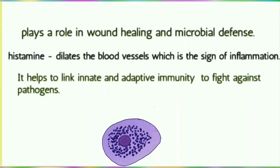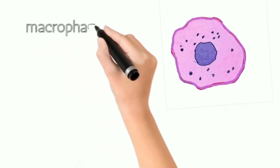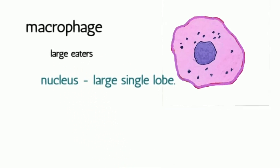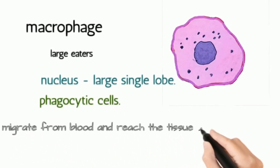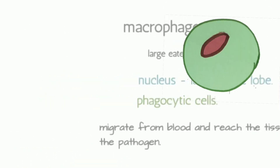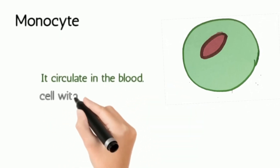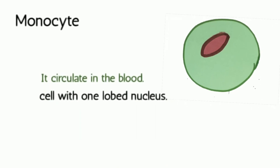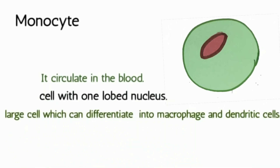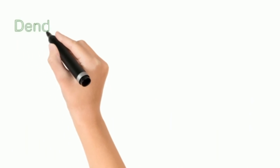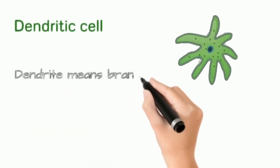Mast cells also serve as a link between innate and adaptive immunity. Macrophages — meaning 'large eaters' — are available in tissues throughout the body and in blood vessels. They destroy pathogens through phagocytosis. Monocytes circulate in the blood and have a single-lobed nucleus. Monocytes differentiate into macrophages. Macrophages perform phagocytosis and also secrete chemokines, which attract other leukocytes to the site of infection.